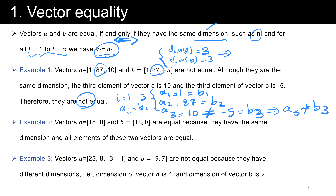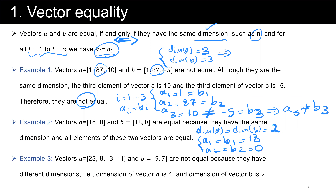The next example: vectors a with elements (18, 0) and b with elements (18, 0) are equal, because they have the same dimension — both equal to 2 — and a1 equals b1 equals 18, a2 equals b2 equals 0. Next example: vectors a with elements (23, 8, minus 3, 11) and b with elements (9, 7) are not equal, because dimension of a is 4 and dimension of b is 2, so 2 is not equal to 4.